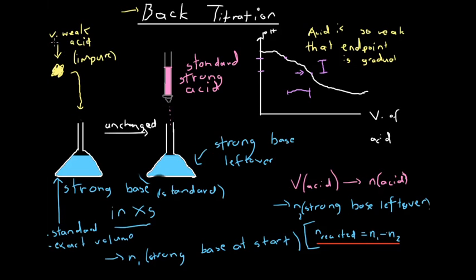Given that we know the formula of the very weak acid — it's impure but we know what it is — we can work out the chemical equation for the reaction between the very weak acid and the strong base. Using stoichiometry, we know the amount of strong base that's reacted and therefore we can work out the amount of weak acid that reacted. That amount of weak acid that's reacted equals the total amount of weak acid in the sample, since all of it has reacted.